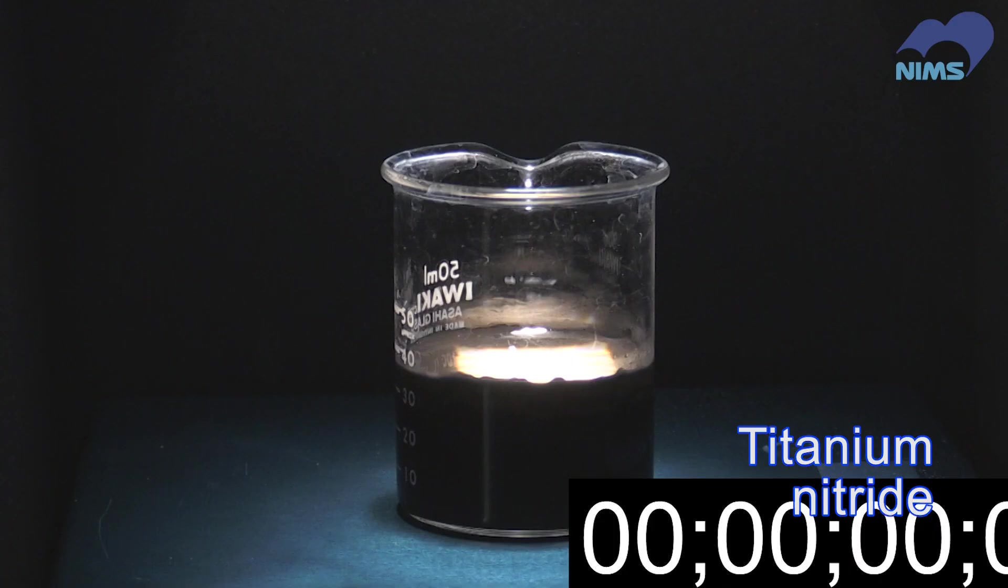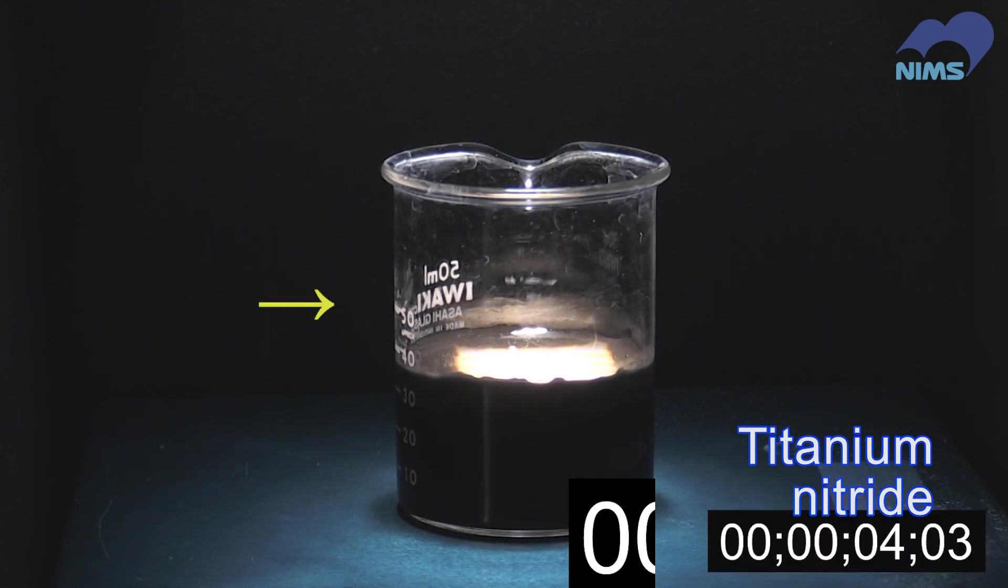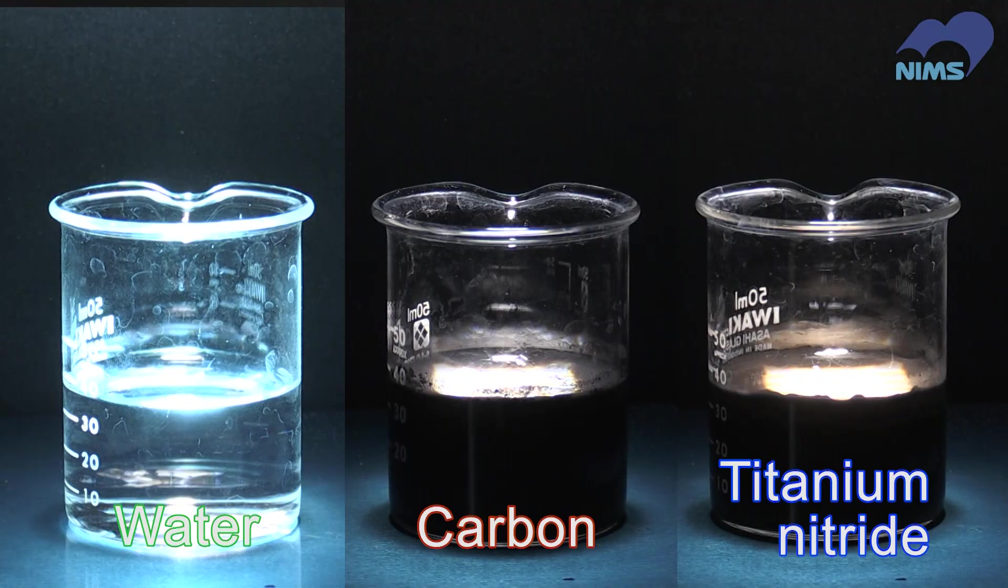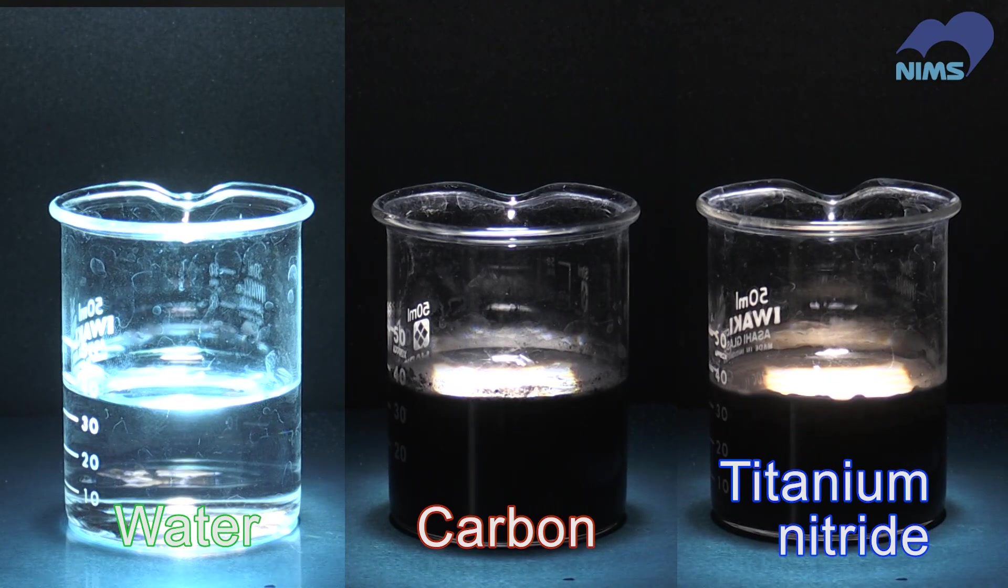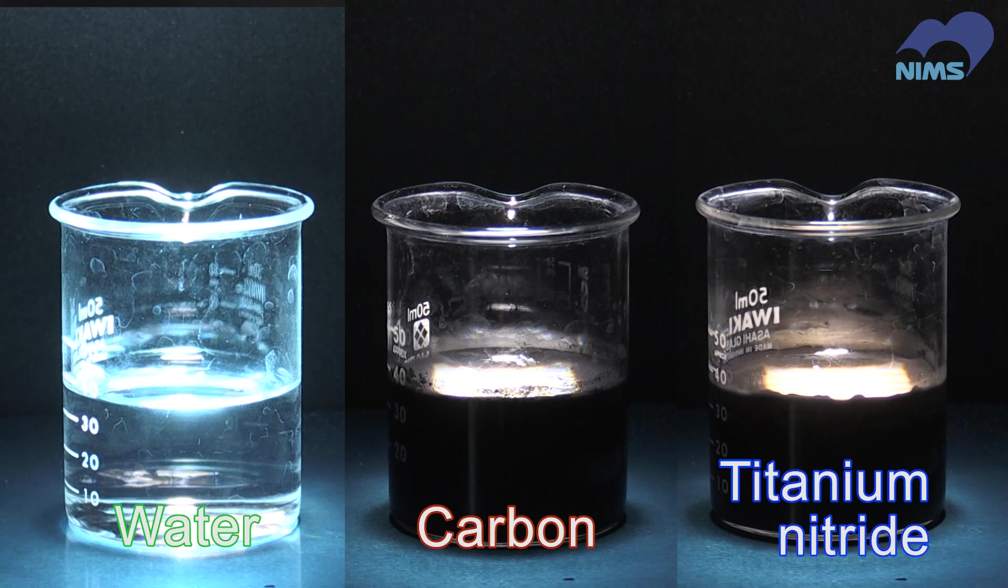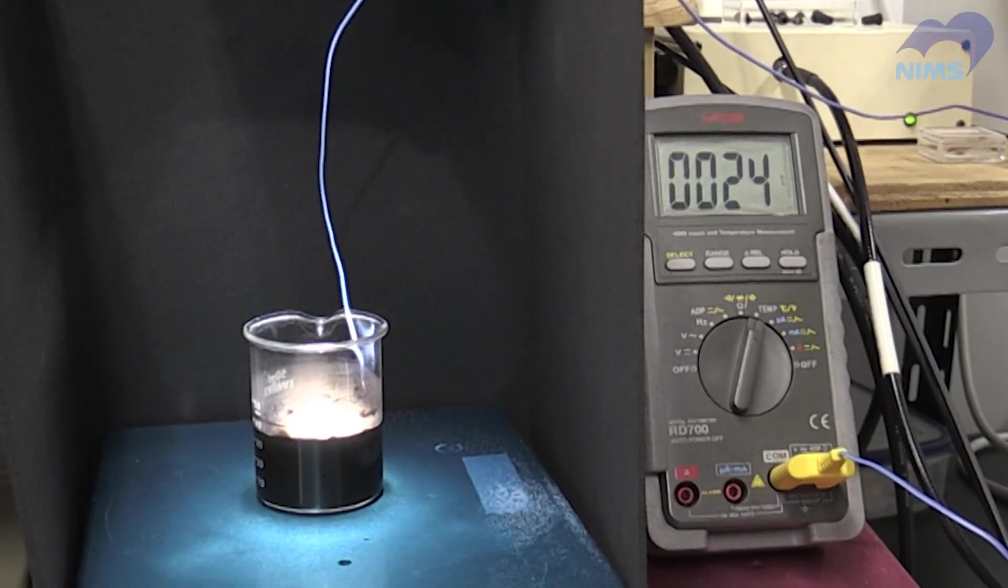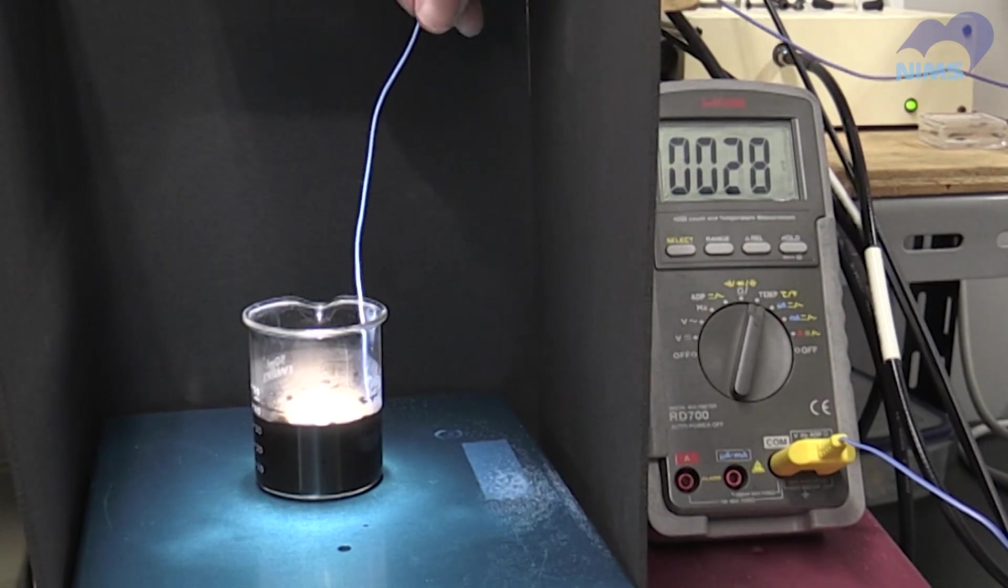Let's examine the last sample: titanium nitride. On the left, you can see steam in only four seconds. This is much more rapid than the water with carbon particles. They may appear to be the same black color, but the calorific efficiency of titanium nitride is far superior. The water temperature is only about 20 degrees Celsius.